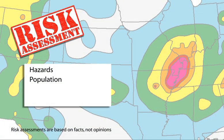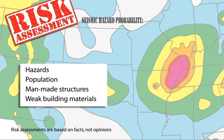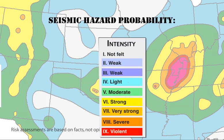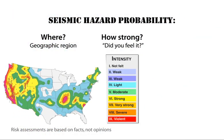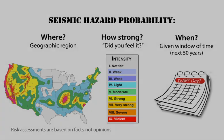Risk assessment takes into account the hazards, population density, man-made structures, weak building materials, and more. Again, a seismic hazard is the probability that earthquake shaking of a certain intensity will occur in a given geographic area within a given window of time. From that, risks can be assessed and included in mitigation efforts.